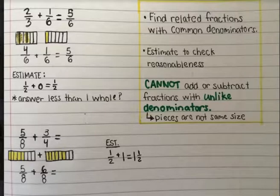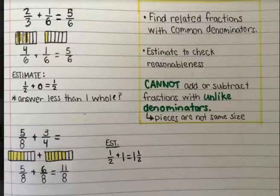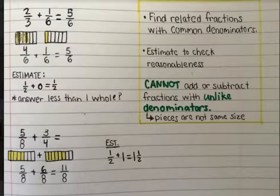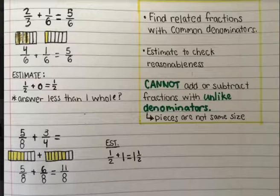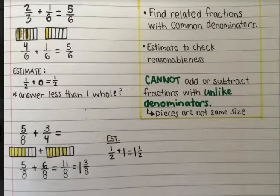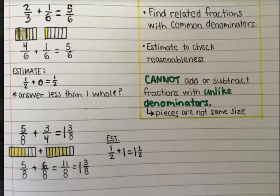I have five eighths plus six eighths. That makes eleven eighths. Now, this is an improper fraction, and so I would want to convert that into a mixed number, because those are just easier to understand and visualize than an improper fraction. So how many whole groups of eight — how many wholes can I make with eleven? Well, I can make one. And how many eighths do I have left over? I have three eighths. So I have one and three eighths. Five eighths added to three fourths is one and three eighths.